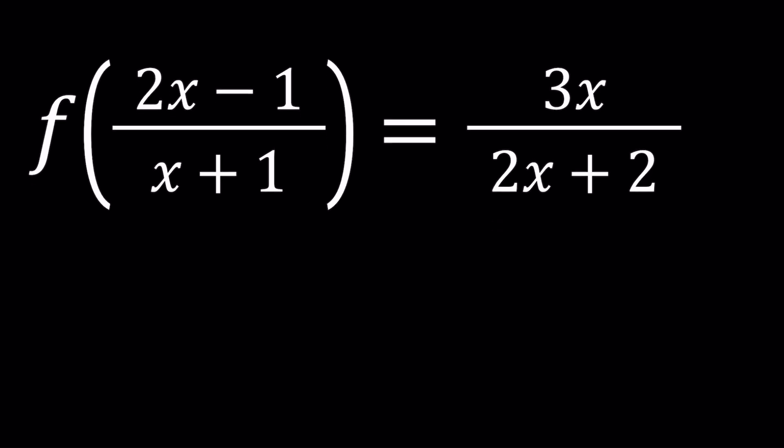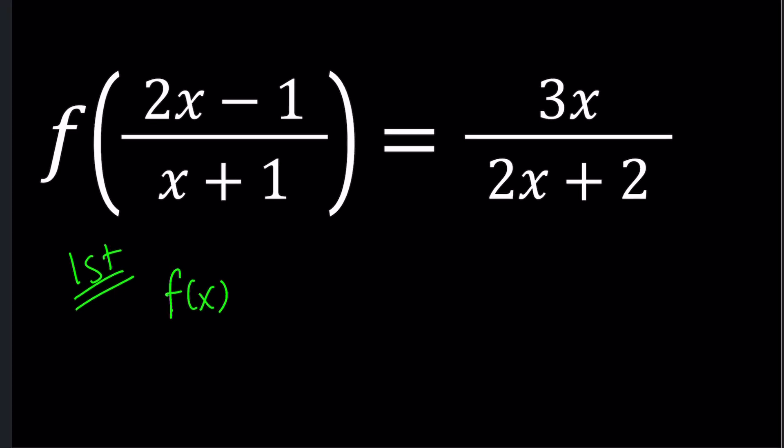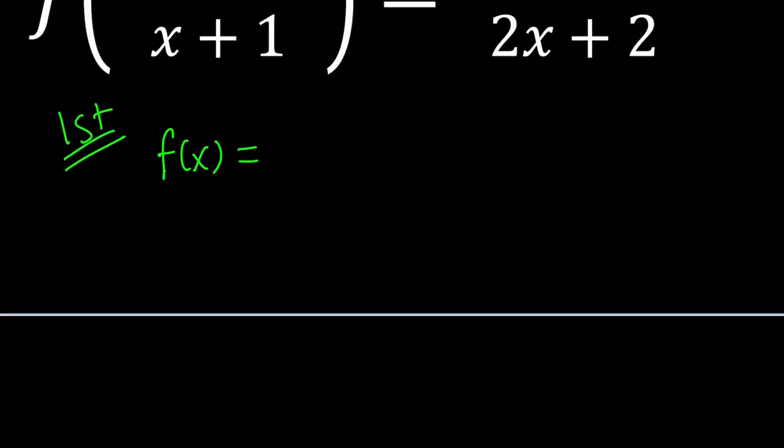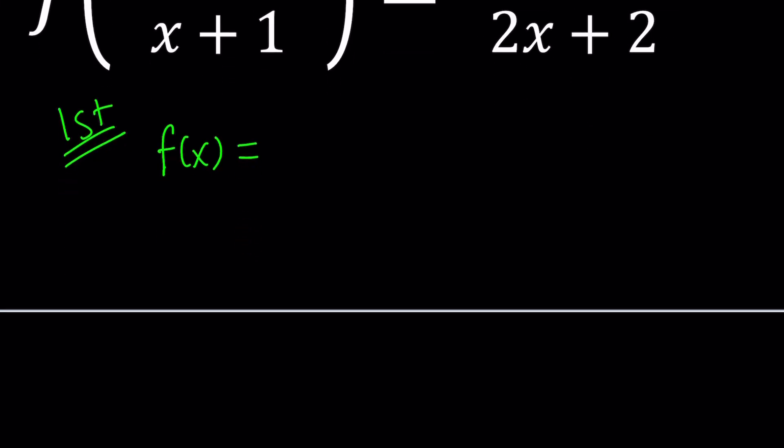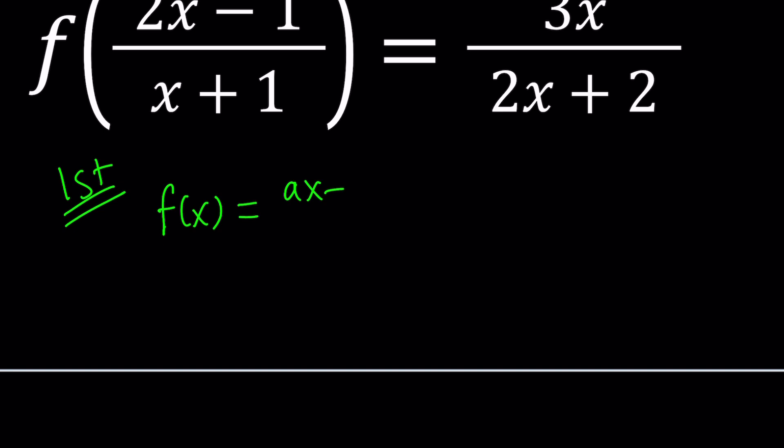I'll be presenting two methods, and let's start with the first one. Looking at this expression, I noticed that the right-hand side is rational. And the left-hand side is also rational, so I'm assuming that f of x is going to be a rational function. But what is a rational function like?